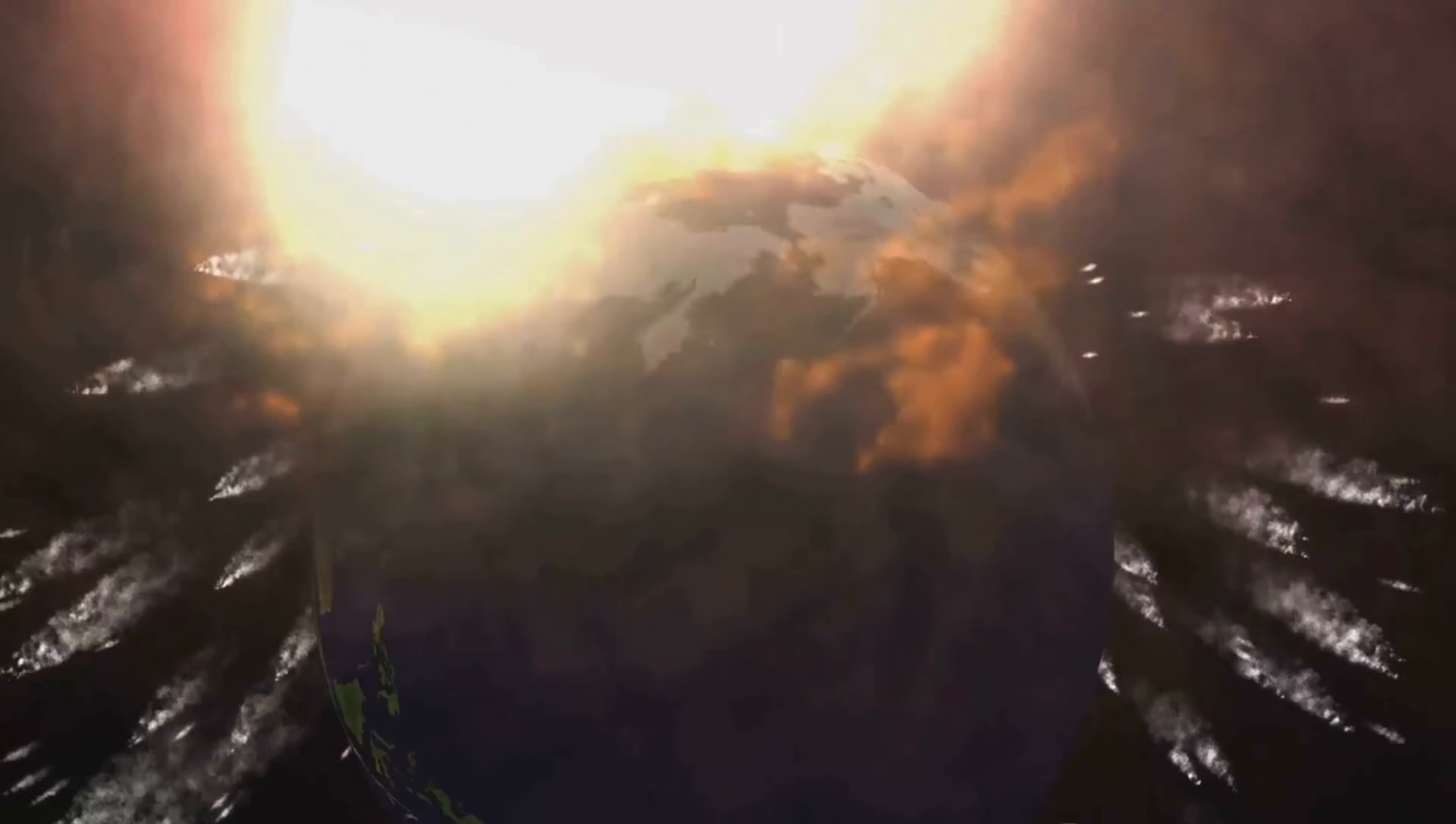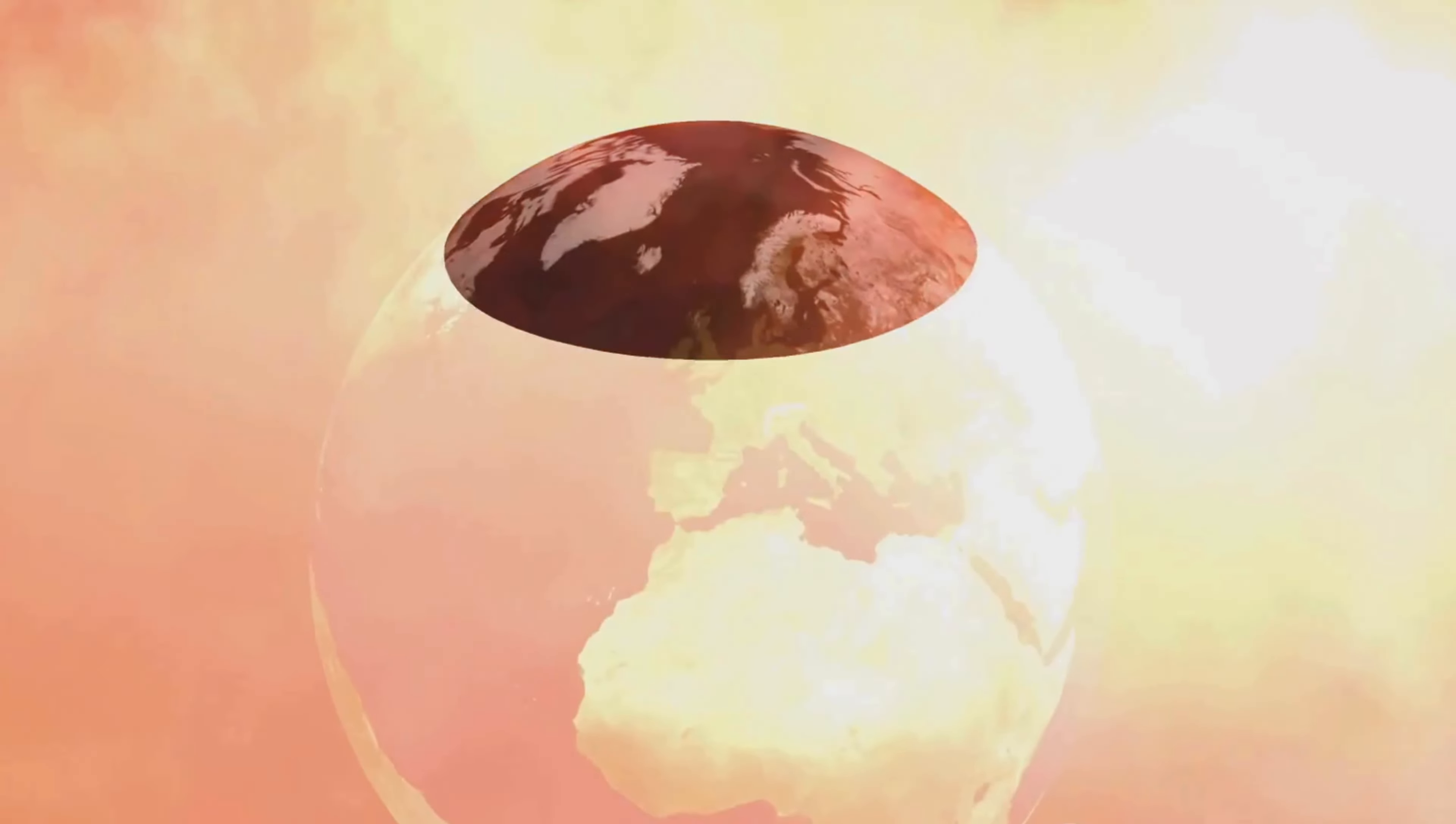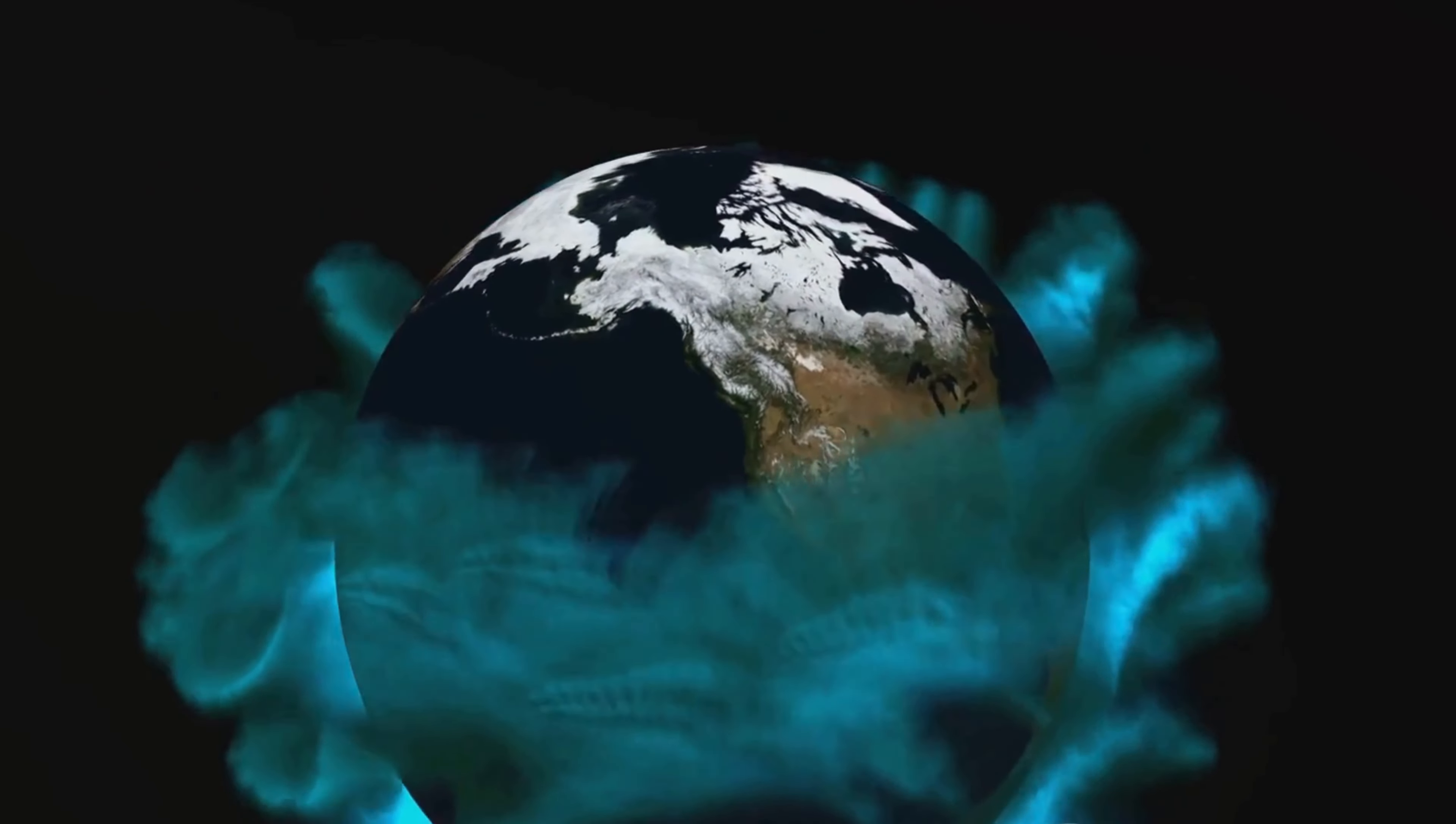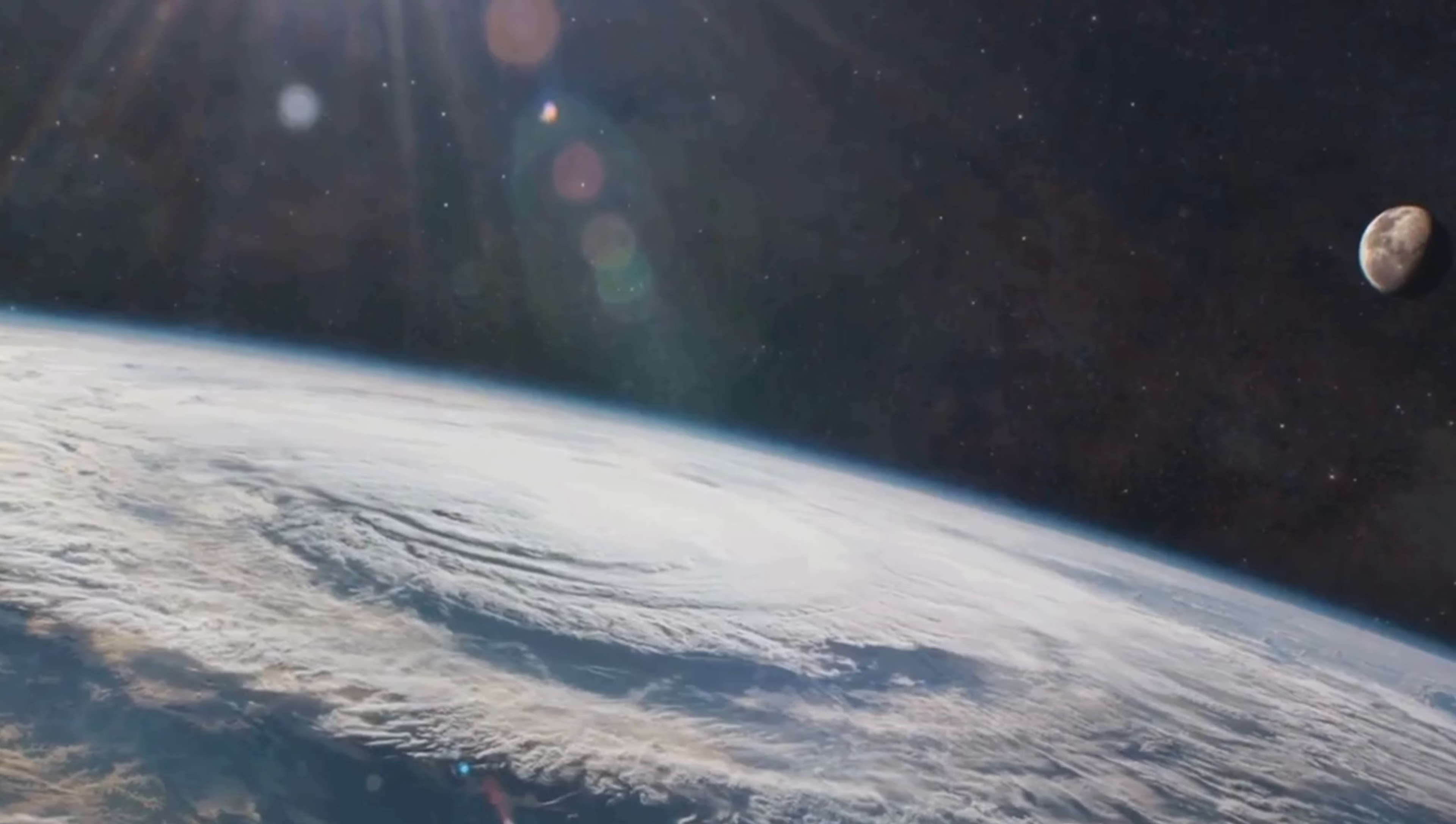But don't let the sweet imagery fool you. Living on a donut-shaped Earth would come with its fair share of challenges. The most significant of these would be fluctuating gravity levels. On a spherical Earth, gravity is pretty much the same everywhere, but on a donut Earth, not so much. Gravity would be strongest at the equator of the donut, where the Earth is thickest, and weakest at the inner and outer edges.